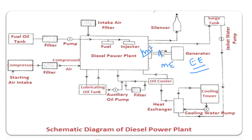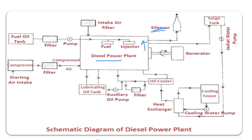Some different components we use, such as the silencer. The function of the silencer is: because there are many rotating parts present in the diesel engine, the noise is very high. So to reduce this noise, we use a silencer. The function of the silencer is to reduce the noise and pass the exhaust air, helping the diesel engine to work smoothly.